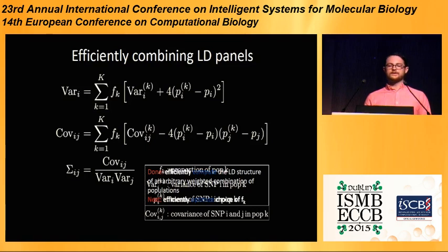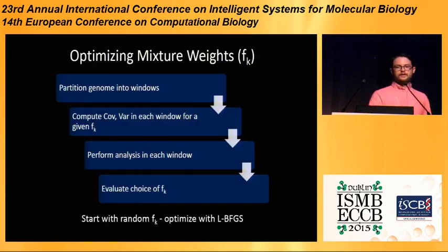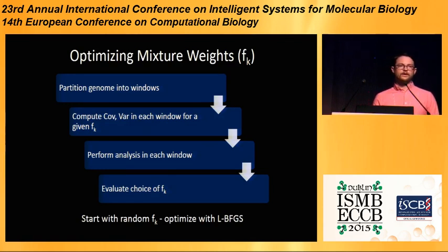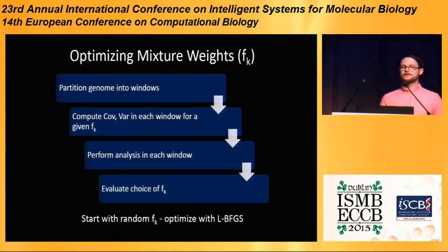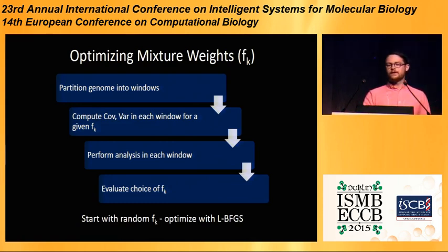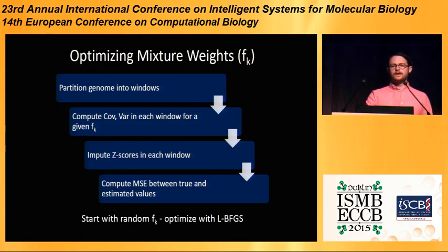The way we do that is to partition the genome into windows — we use 1,000 SNPs in this work. We compute the covariance and variance for each window for a given choice of weightings, perform our analysis, and then evaluate our choice of weightings. We start with a random distribution of weights and then optimize using a constrained optimization algorithm — we use LBFGS, which is a modified Newton's method. In this work, we're going to look at imputing z-scores in order to compute the optimal weights, and to evaluate how well we've done, we'll use the mean squared error between the true and estimated values.